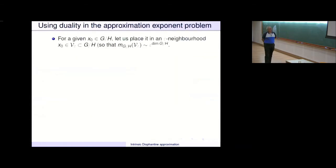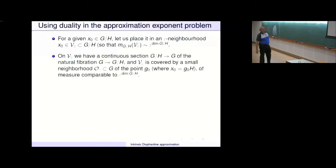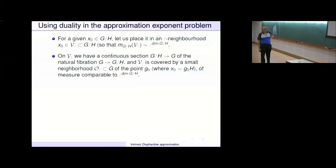For a given x_0 in G mod H, let us place it in an epsilon-neighborhood in G mod H. The epsilon-neighborhood has volume comparable to epsilon to the dimension. On the neighborhood U_epsilon, we have a continuous section from G mod H to G of the natural fibration. U_epsilon is covered by a small neighborhood O_epsilon in G of the point g_0, where the coset associated with g_0 is our original point x_0, of measure also comparable to epsilon to the dimension. You should think of it as a product set — basically a cylinder.